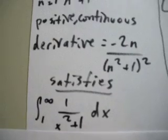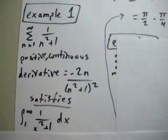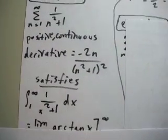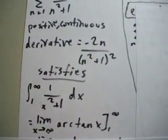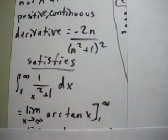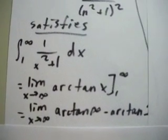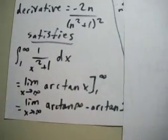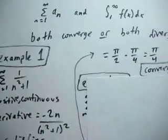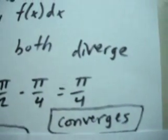When we plug it into an integral, we get the integral from 1 to infinity of 1 over x squared plus 1 dx. When you do the integral, you'll find that it's an arctangent problem. You get the limit as x approaches infinity of arctangent x evaluated from 1 to infinity. When you plug in those bounds, you get arctangent of infinity minus arctangent of 1, which equals pi over 2 minus pi over 4, and that equals pi over 4. Since you get a finite answer, it converges.